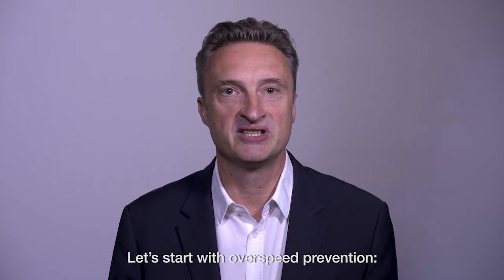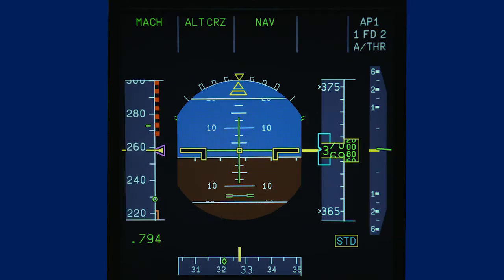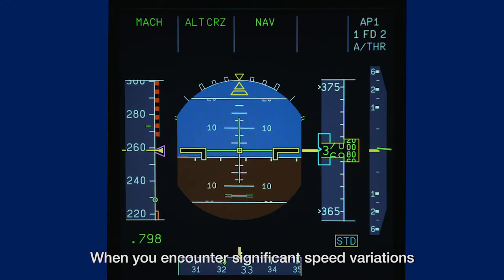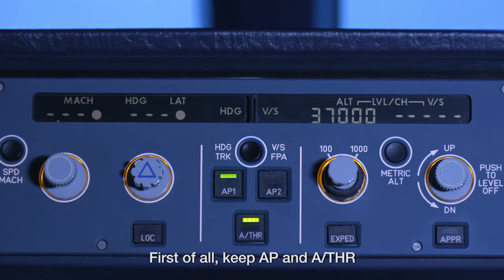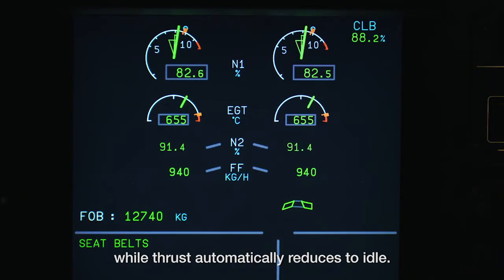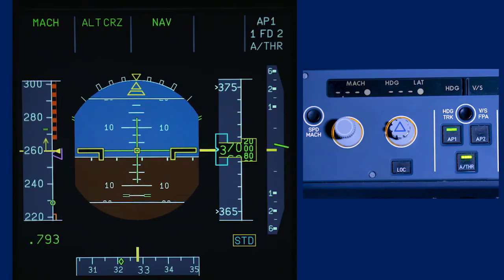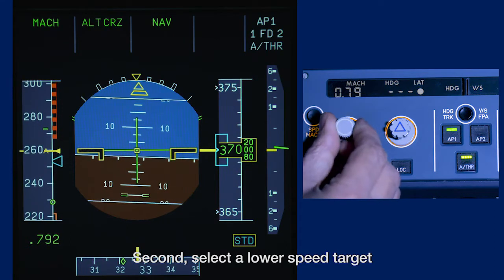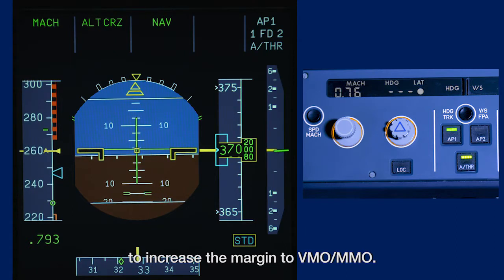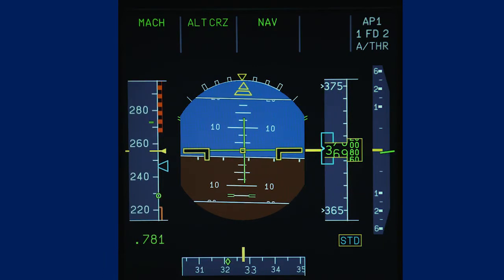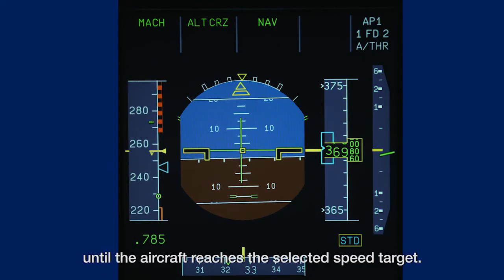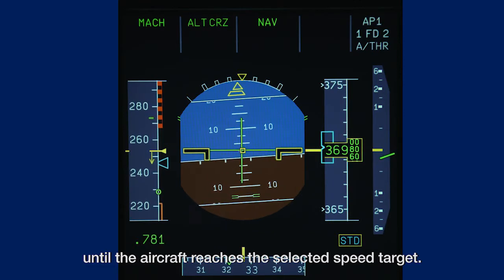Let's start with overspeed prevention. When you encounter significant speed variation close to VMO/MMO, prevention is possible. First of all, keep autopilot and autothrust to remain on the intended flight path while thrust automatically reduces to idle. Second, select a lower speed target to increase the margin to VMO/MMO. However, do not select a speed below green dot, as autothrust will command idle until the aircraft reaches the selected speed target.